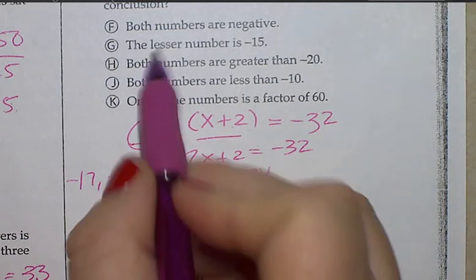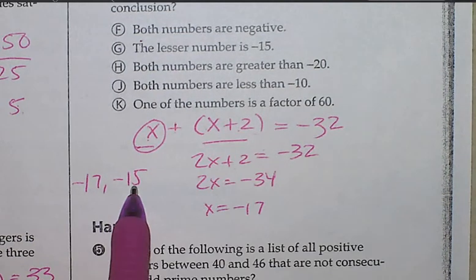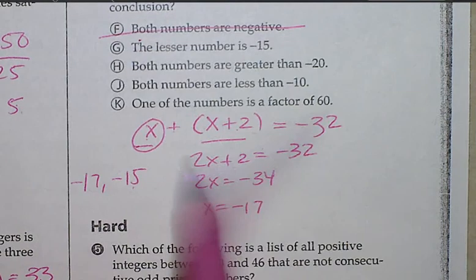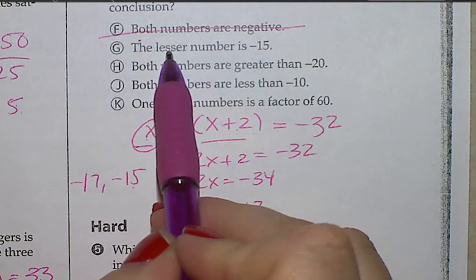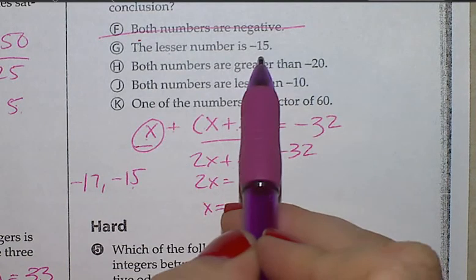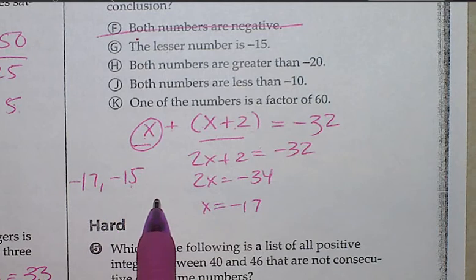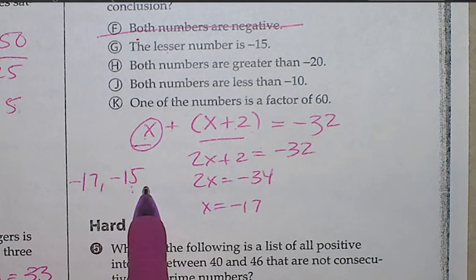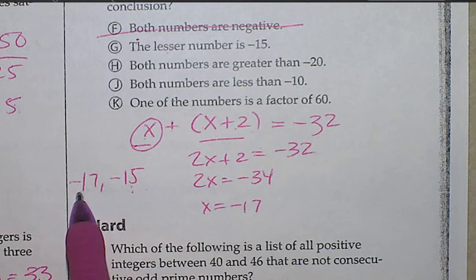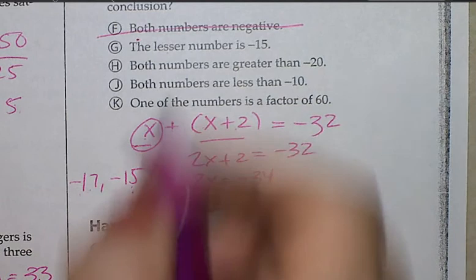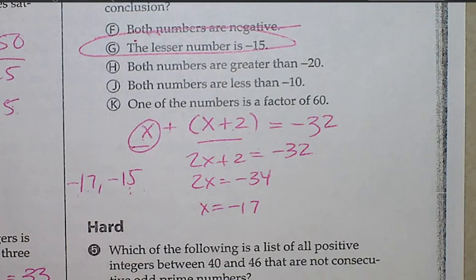All right. Both numbers are negative. True or false? True. So which one of these is false? The lesser or the small, the smaller of the two numbers is negative 15. True or false? True. Is this the smaller of the two numbers? Which one is actually smaller? Negative 17. Negative 17.